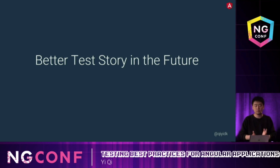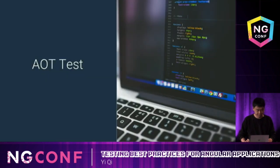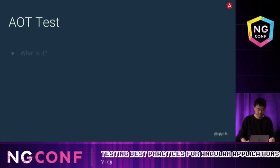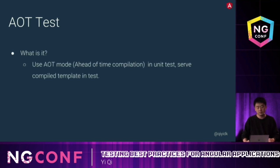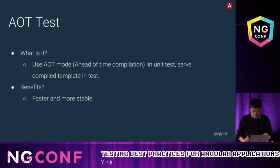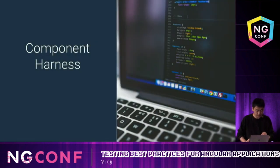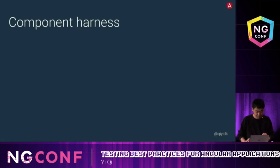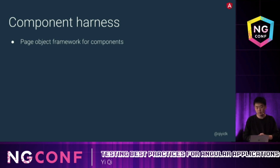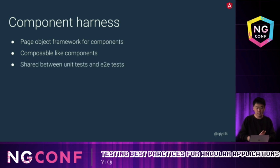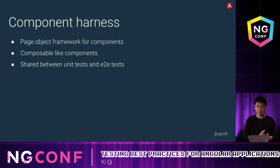Let's take a quick look at what we'll have in the future. The first thing is AOT testing. AOT — ahead-of-time compilation — in unit tests will serve compiled templates in tests, making them faster and more stable. More importantly, it will be closer to what is served in production. The next thing is component harness — a page object framework for components. It can be composable like components, and it can be shared between unit tests and end-to-end tests, meaning we write one page object that works in both.